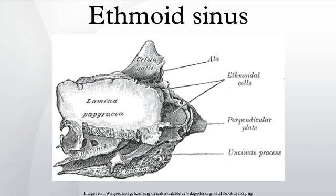Haller cells are infraorbital ethmoidal air cells lateral to the lamina papyracea. These may arise from either the anterior or posterior ethmoidal sinuses.